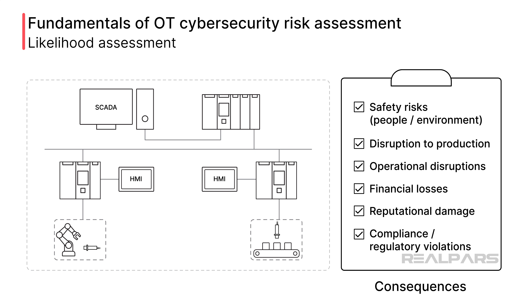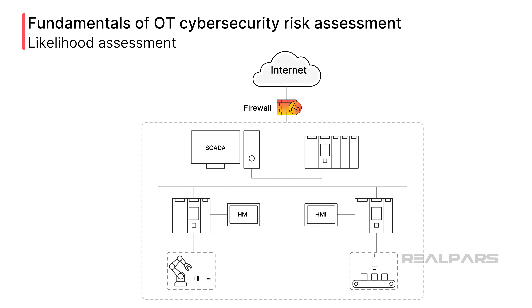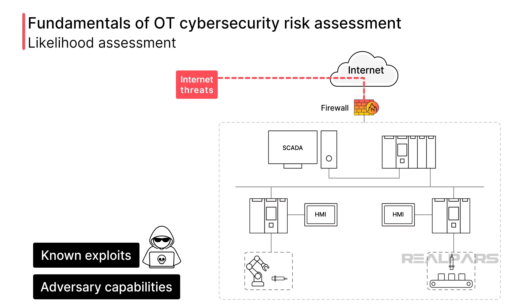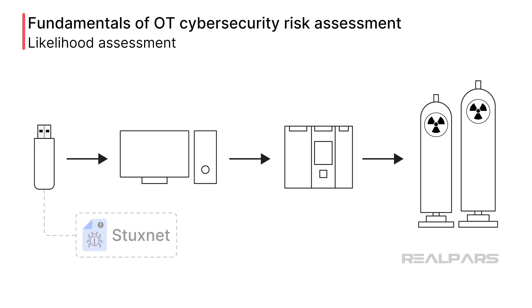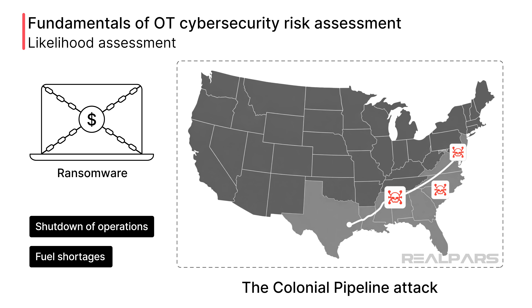The next step is the hardest: determining the likelihood that these consequences will actually be realized. Determining the probability of exploitation of your system's vulnerabilities involves predicting your exposure to internet threats, identifying known exploits and adversary capabilities, and importantly, the history of incidents that have affected systems like yours. For example, Stuxnet was a pervasive and debilitating virus that attacked the hardware of a specific supplier. The Colonial Pipeline attack was a ransomware cyber attack that led to a shutdown of operations and significant fuel shortages across the East Coast.